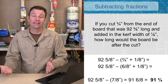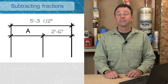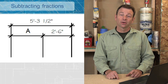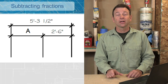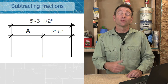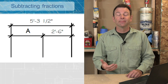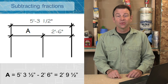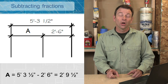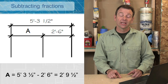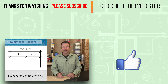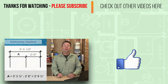Here's an example of subtracting fractions you might see in the field or when checking a set of plans. You have a longer dimension and a shorter dimension, and you want to know what's left when you subtract the shorter from the longer — that would be dimension A. We want to solve for A: we're going to take five foot three and a half inches and subtract two feet six inches from it. One way to solve this would be to convert both measurements to inches, subtract, then convert back to feet and inches. For more information and different ways to solve this, check the student resources.